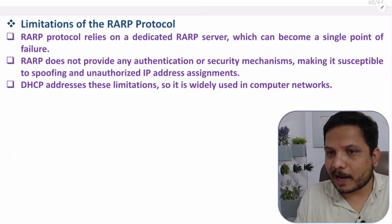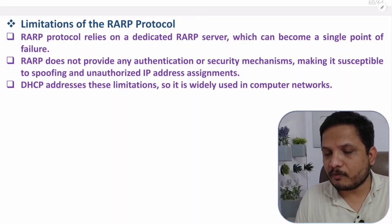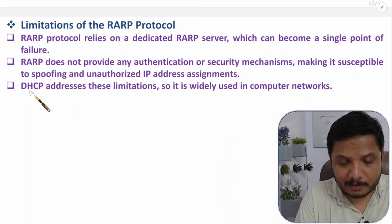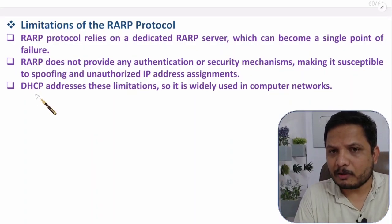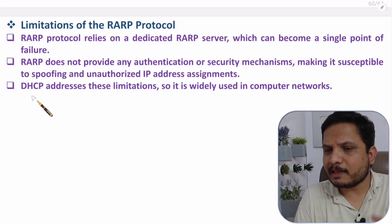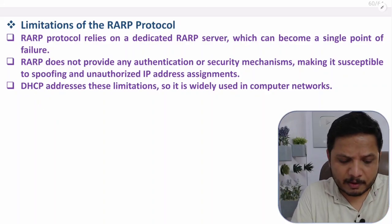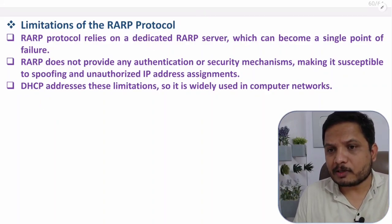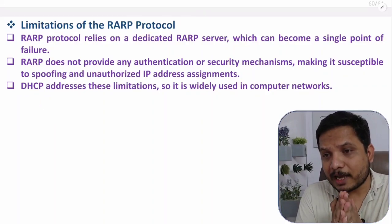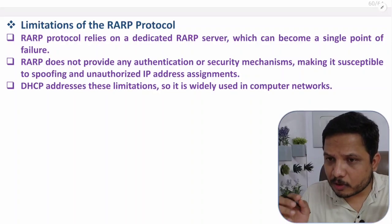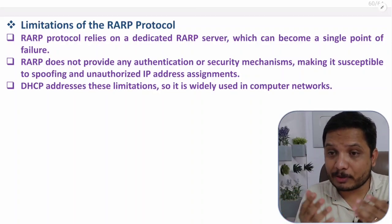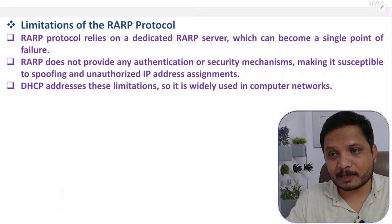Because of these limitations, RARP protocol has been replaced by DHCP. Nowadays in computer networks, DHCP is used for IP address assignment. RARP was used previously in the 1990s. If you have anything to share, please note it in the comment section. Thank you so much for watching this video.